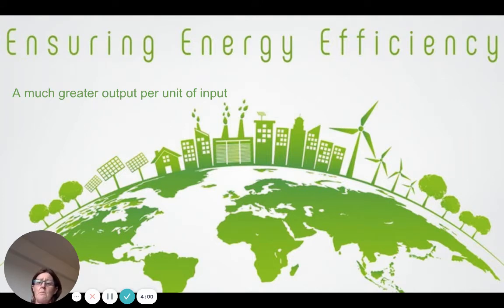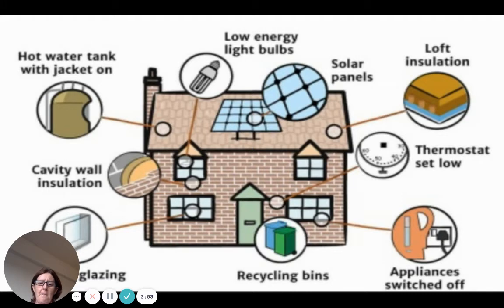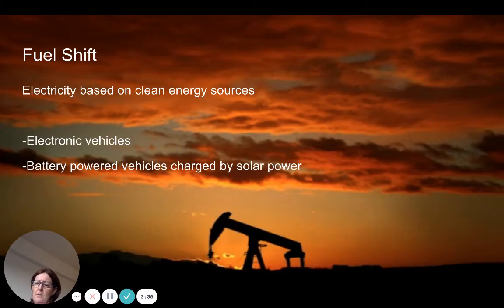The key is to get more output relative to input. Energy-efficient appliances are great, as are low-energy light bulbs in the home. Solar panels provide renewable energy, and insulation is very important — using double or triple glazed windows can keep the heat in if you are heating your home.